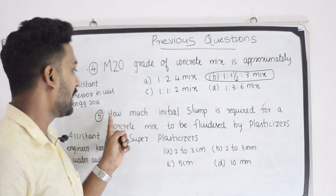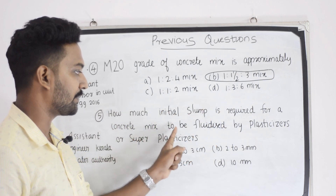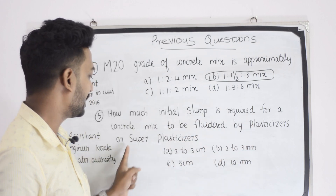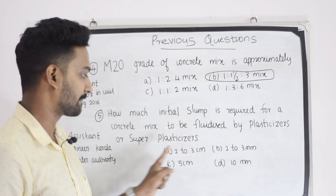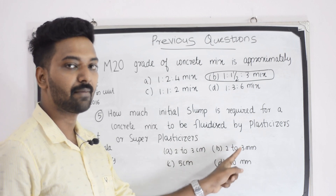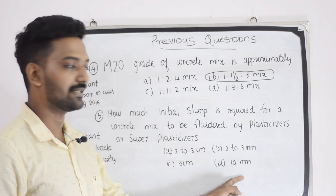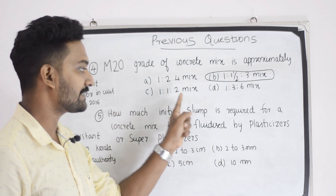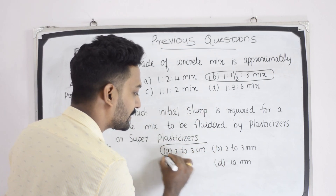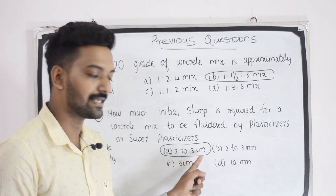How much initial slump is required for a concrete mix to be fluidized by plasticizers or super plasticizers? Options: two to three centimeter, two to three millimeter, five centimeter, ten millimeter. The answer is two to three centimeter.